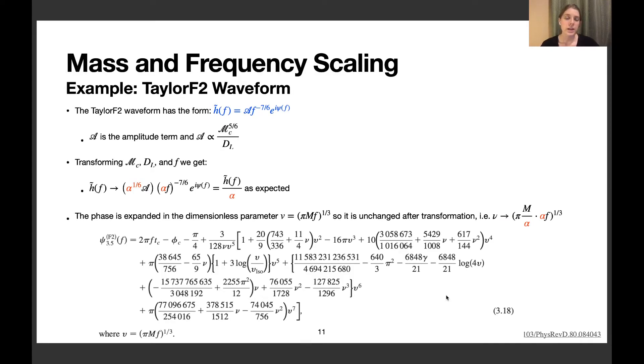Here I've shown an example for the TaylorF2 waveform, which we use in all our calculations. By plugging in the factors of α into all the appropriate places in the amplitude, frequency, and phase, everything cancels out just as we expect. This transformation works.